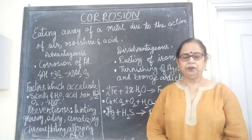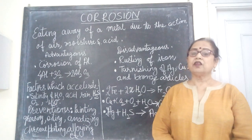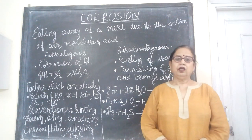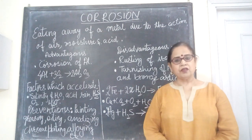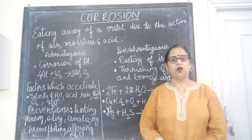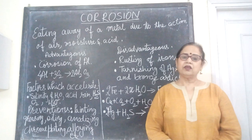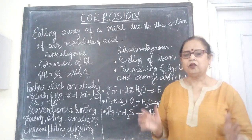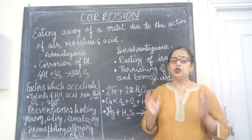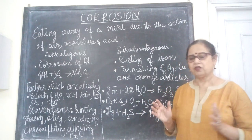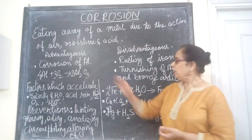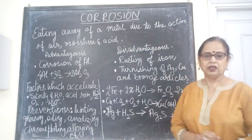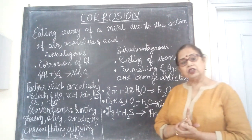Rusting of iron is a special case of corrosion where a brown flaky substance is formed on the surface of iron articles. It slowly starts deteriorating, breaks down, and leads to huge national loss. This phenomenon of corrosion is both advantageous as well as disadvantageous.